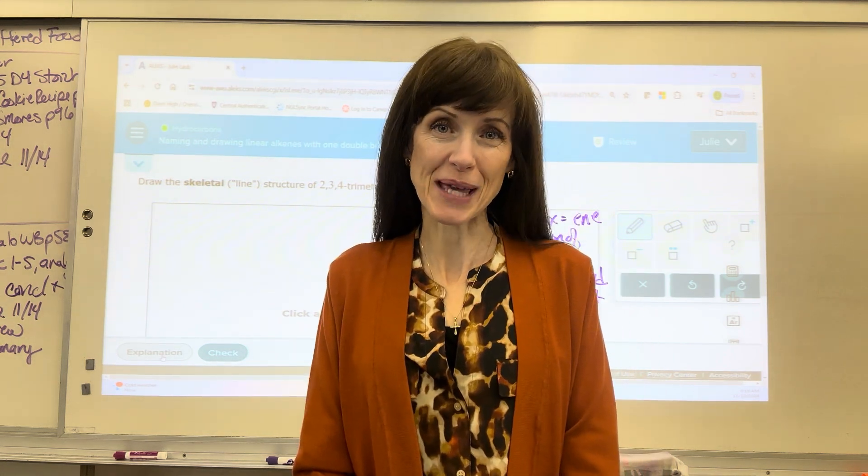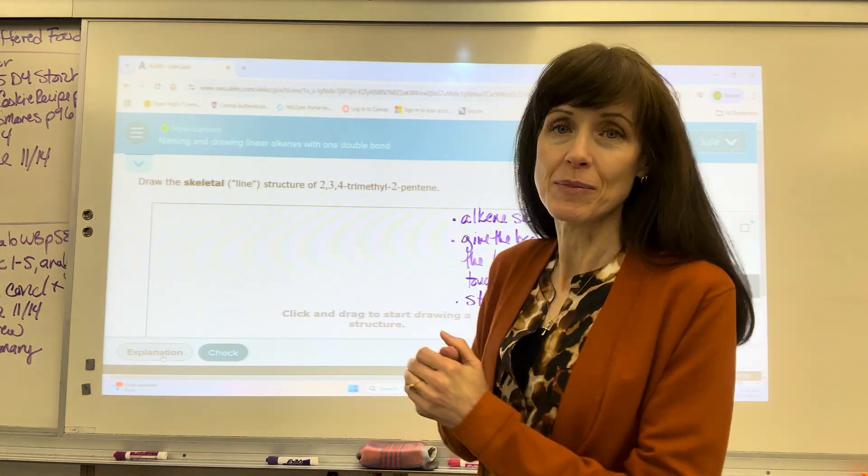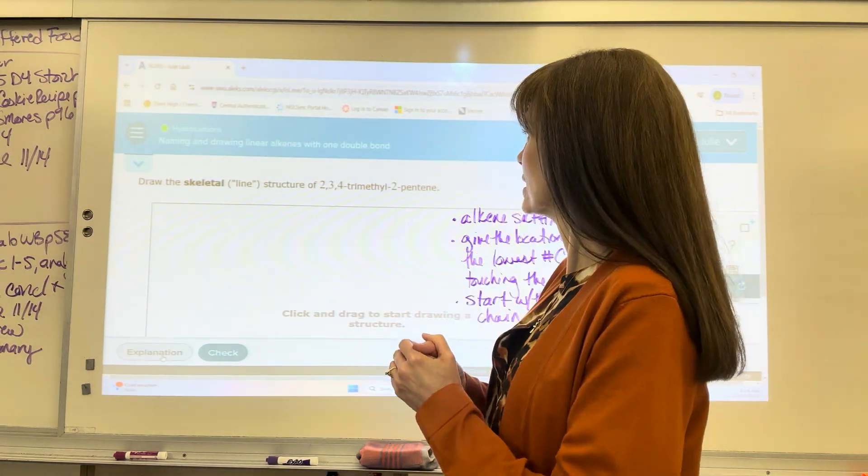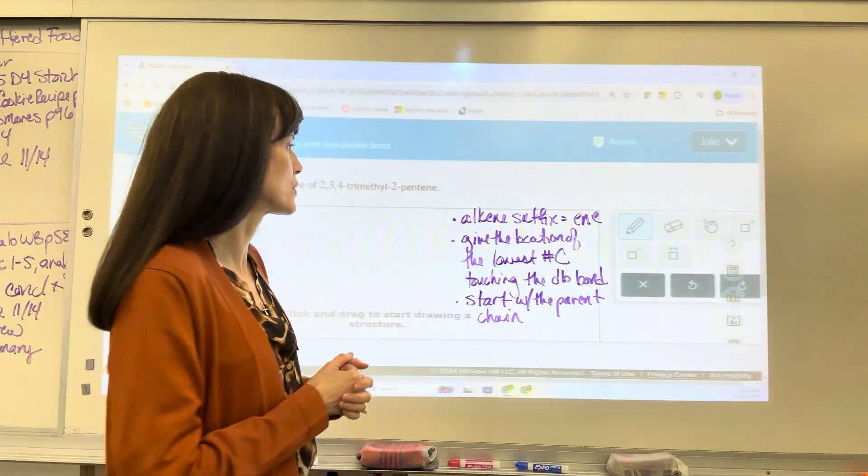Hello everyone. Welcome to Old School Chemistry. Today we're going to do an Alex topic. It is naming and drawing linear alkenes with one double bond.